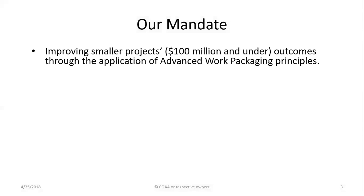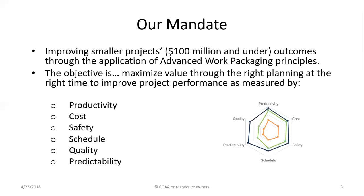Our mandate is to focus on projects that are $100 million and smaller. The AWP model was originally developed for very large projects, and over time people have been applying it to smaller projects but found adjustments are needed. We've been getting requests for the last couple of years for suggestions on how to modify AWP for smaller projects. Research shows that productivity, cost, schedule, safety, quality, and predictability can all improve with advanced work packaging, and we want to take those benefits down to smaller projects.